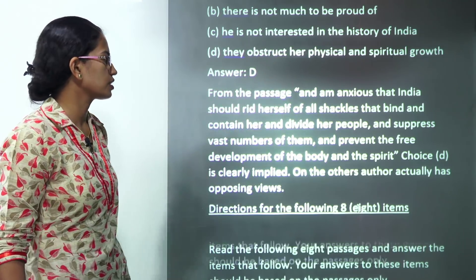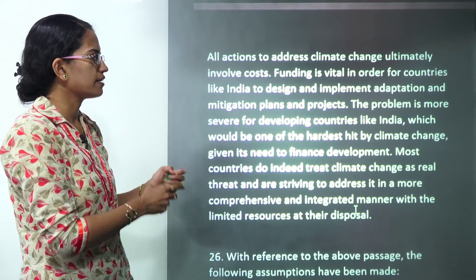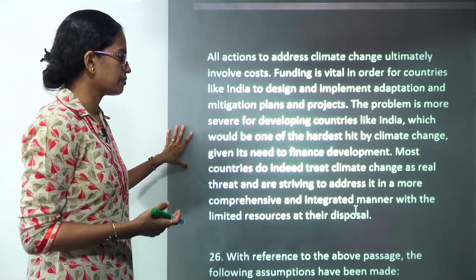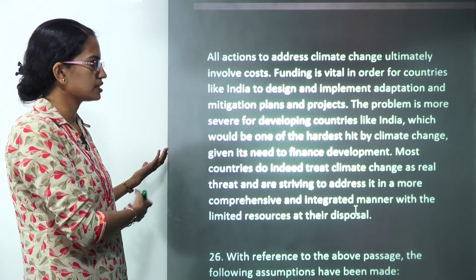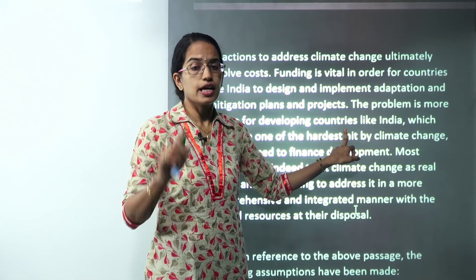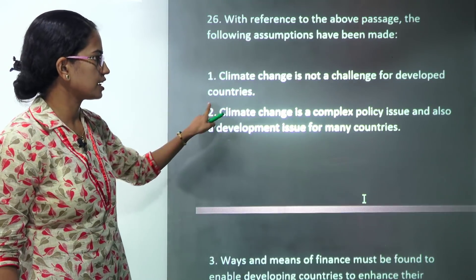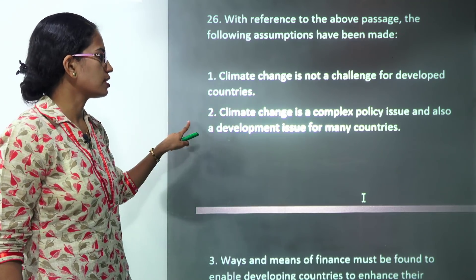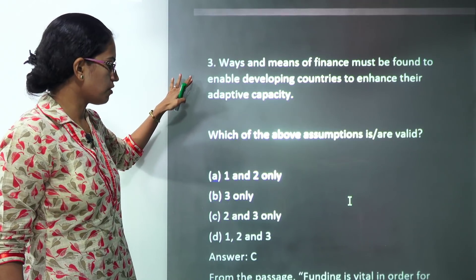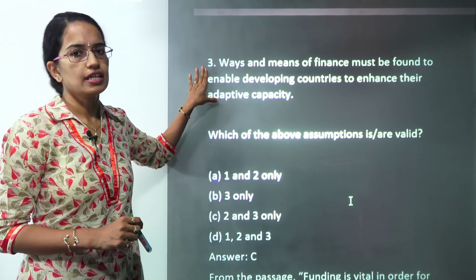So the obstruction of the physical and spiritual growth would be the right answer. Now you have 8 different passages again. The action to climate change talks about the funding for climate change and the efforts that most countries are doing. The sentence is very important: The problem is more severe for the developing nations. It's more severe for the developing nations but it does not say it's not present for the developed nations. Therefore the first statement becomes incorrect. The second talks about the developmental issue for many countries because of climate change. That's correct. And the ways and means of financing. So second and third statements are correct for this question.